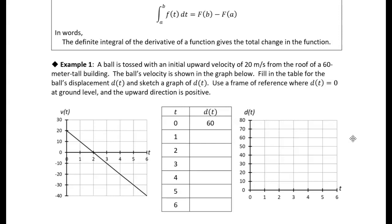The ball's velocity v of t is shown in the graph. We're asked to fill in the table with the displacement of the ball over time. Our frame of reference takes d equals 0 to be ground level, so we're starting at 60 meters up because we're on top of a building. Velocity is the derivative of the displacement — the change in displacement over time, in meters per second. So velocity is a derivative, and we need to integrate the derivative in order to find information about the displacement of this ball.